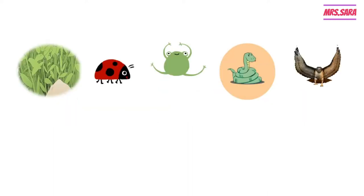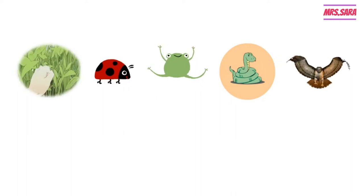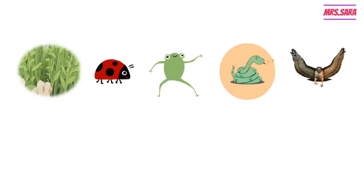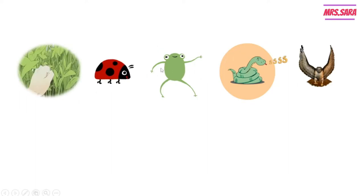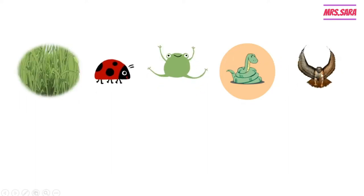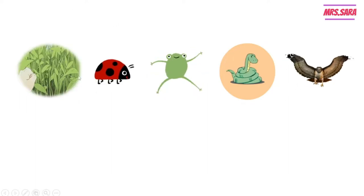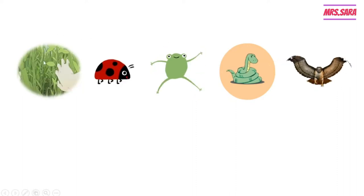Hello Primary Five, welcome to my channel. I'm Miss Sara, I'm teaching science, and today we will continue talking about food chains. As you can see here, we have a picture of a green plant or grasses, and we have a picture of a ladybug or petal, and we have a frog, snake, and hawk.